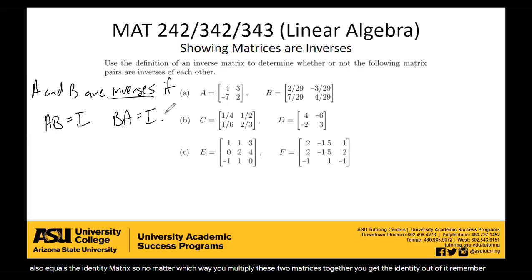Remember what the identity matrix is? It's a matrix with ones along the diagonal and zeros everywhere else.